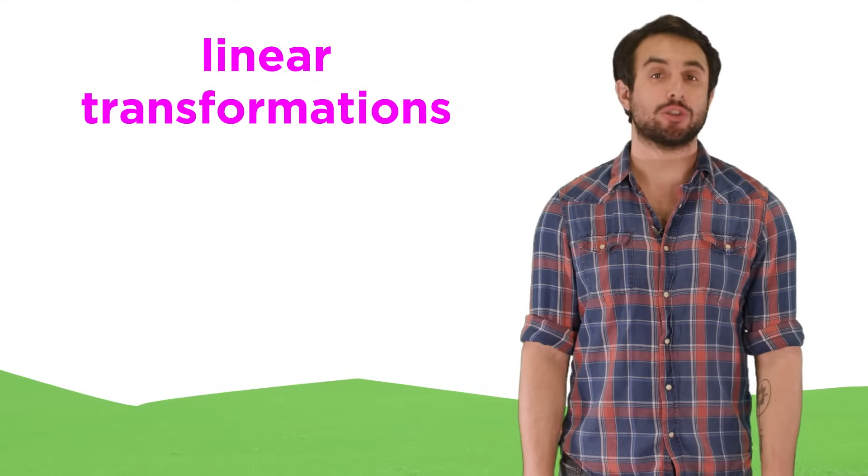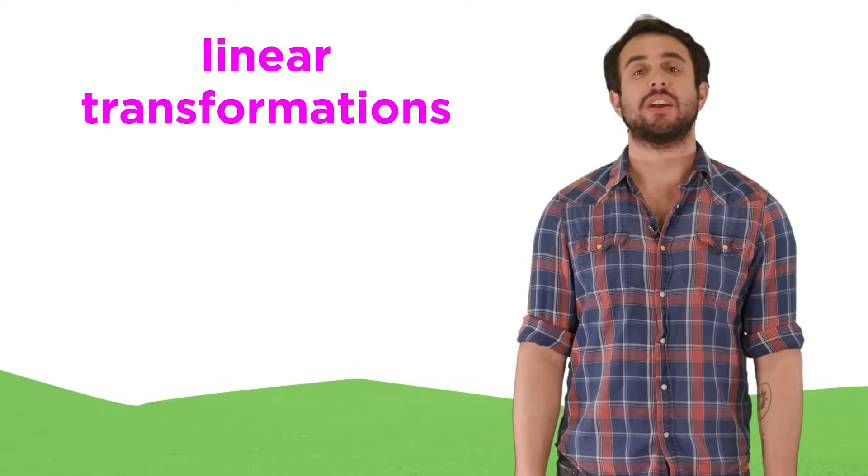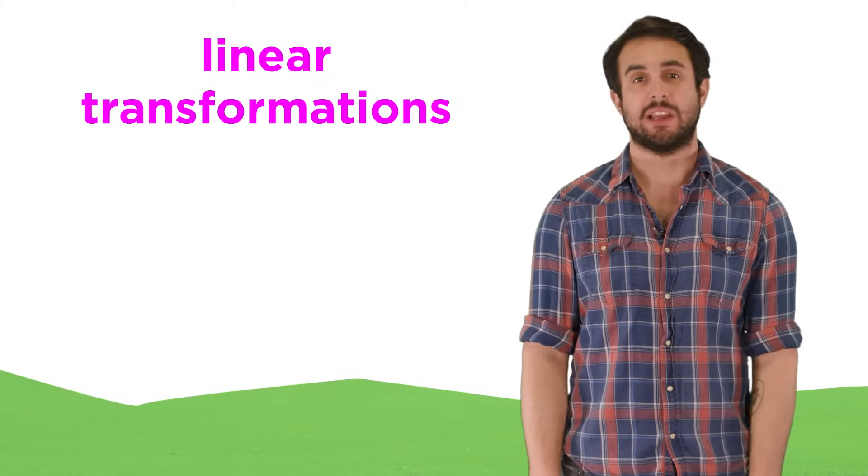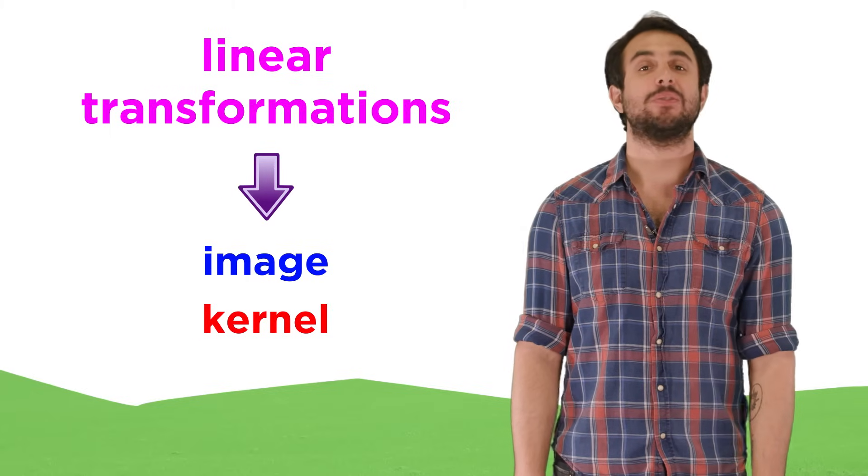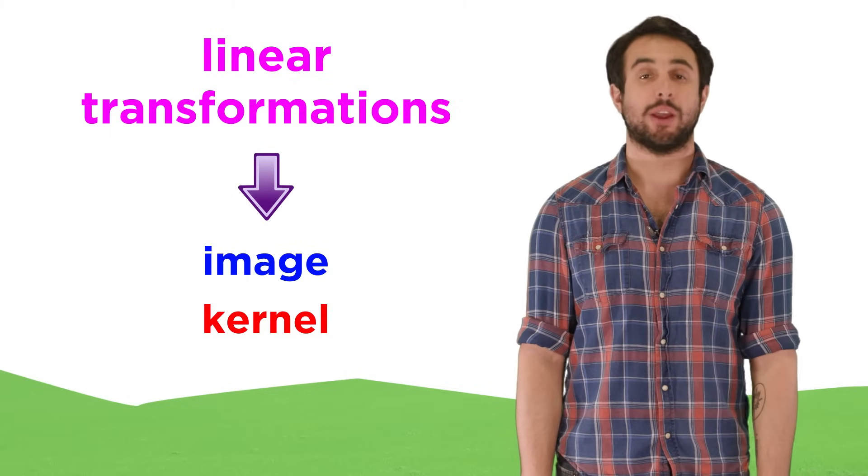Now that we have learned about linear transformations, we have to discuss two related concepts, and these are called image and kernel. These are best defined by example, so let's take a look at one now.